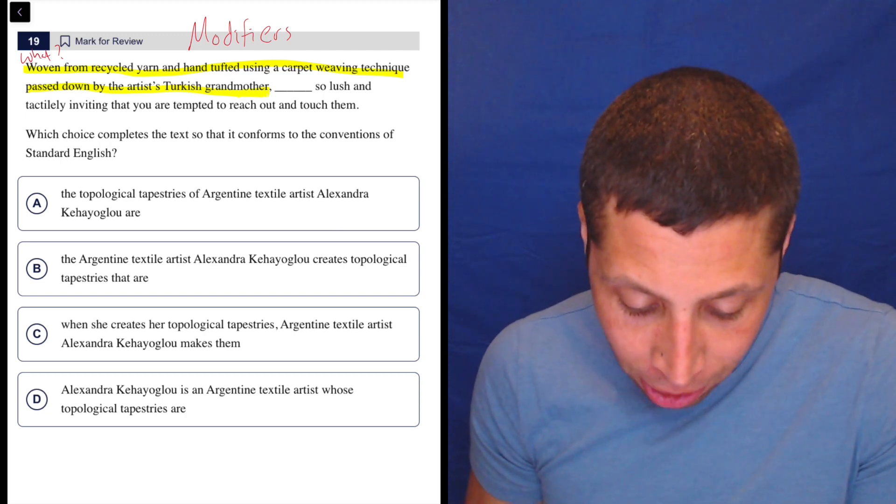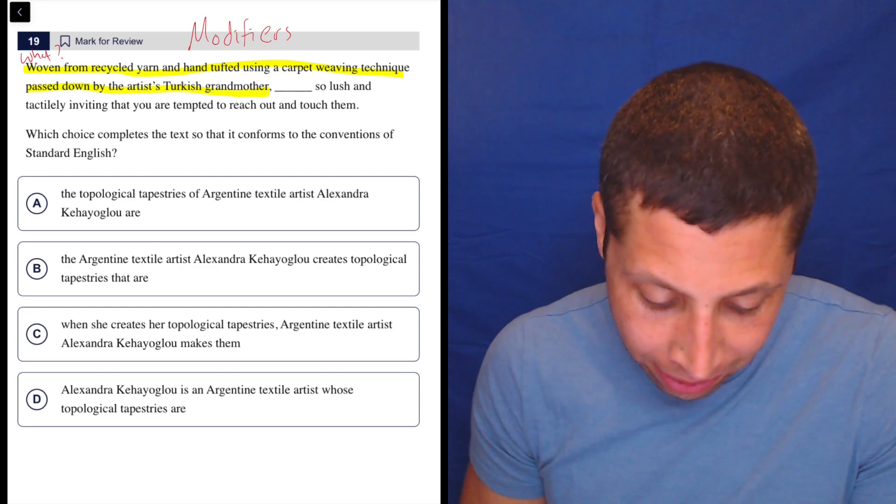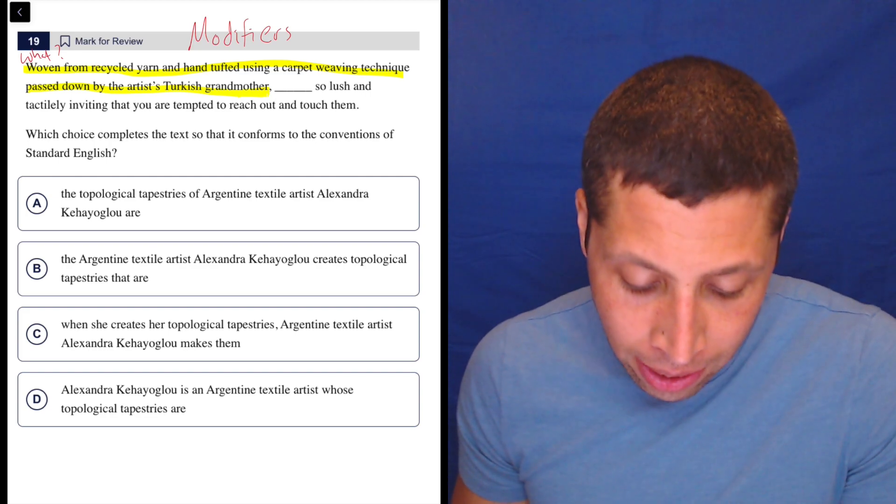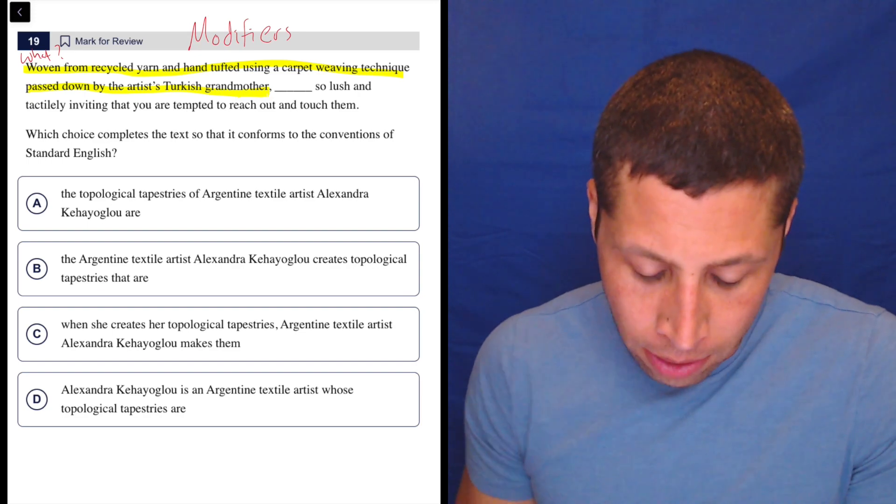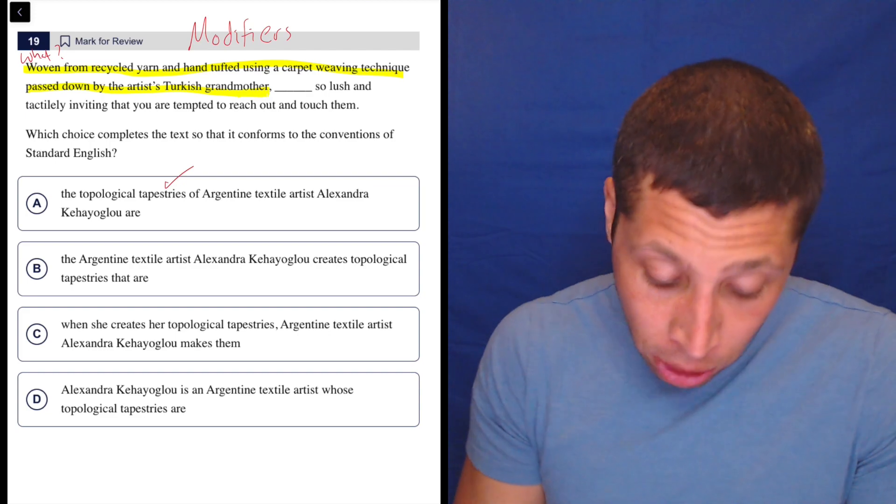So the topological tapestries of Argentine textile artist Alexandra Kehayoglou are so lush and tactically inviting that you were tempted to reach out and touch them. Well, a tapestry is like a carpet, a rug. So that seems good.